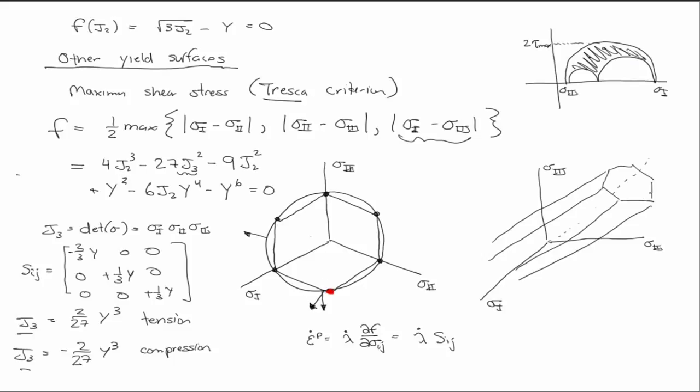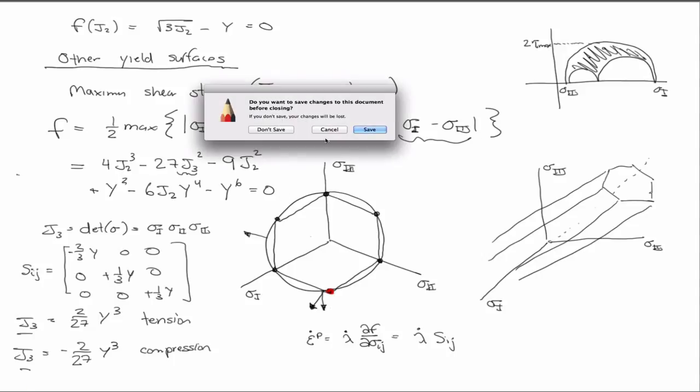And you can also see because of the sharp corners at this point exactly, the normal is undefined. And so that can cause some issues when using the Tresca criteria. And sometimes this is where non-associative flow rules come into play.